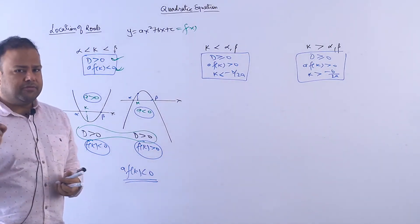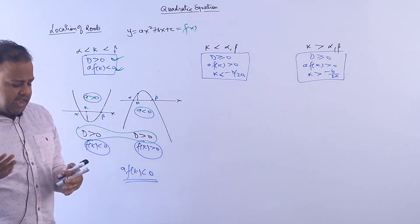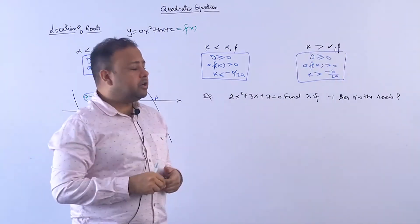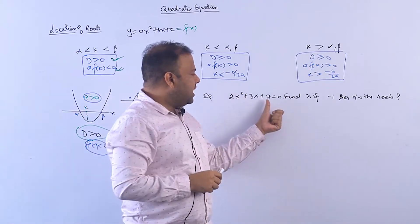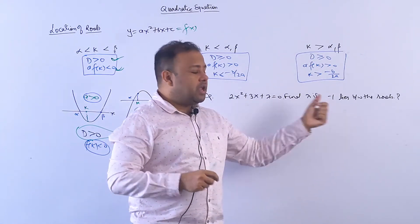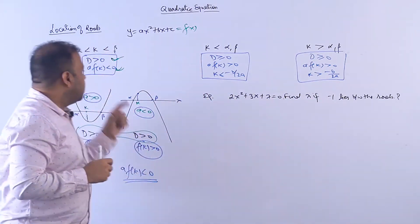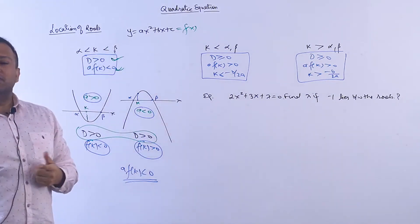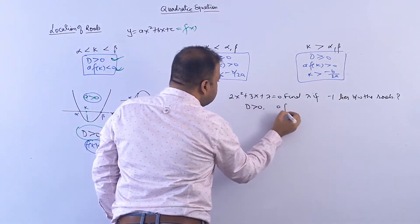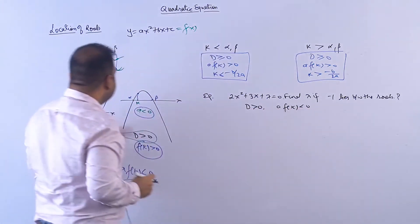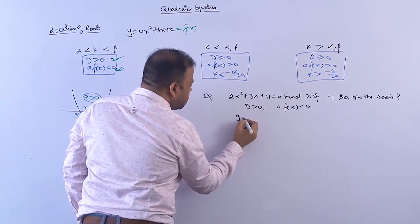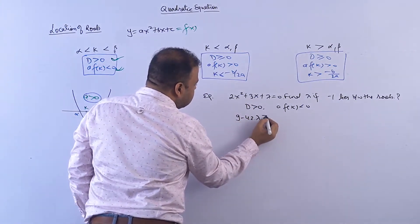When two numbers have opposite signs, their product is negative. So a·f(k) being negative covers both conditions simultaneously. D must be positive and a·f(k) must be negative — then the number k will lie between the roots. As simple as that. So if k lies between the roots: D > 0 and a·f(k) < 0.